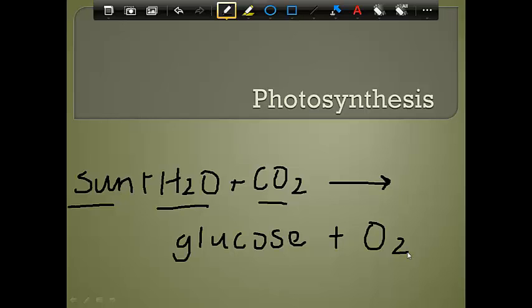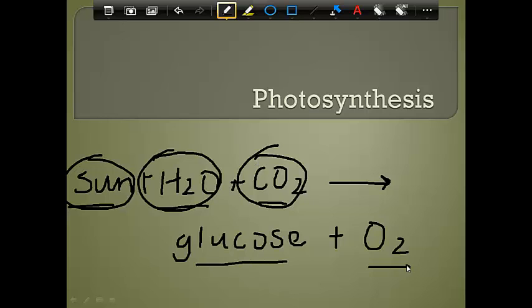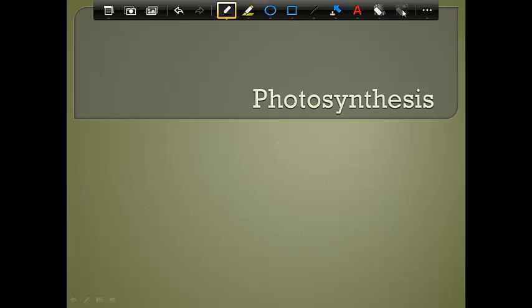So there's our general equation for photosynthesis. As we go through these processes, we're going to look at why do we need sunlight, water, and carbon dioxide, and also keep in mind where are we giving off glucose and oxygen gas.